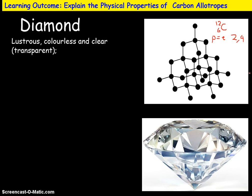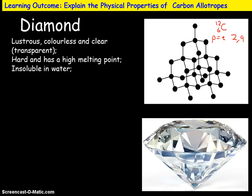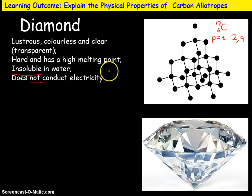Describing diamond: first of all it's lustrous, which is effectively a word for shiny. It's colourless and clear — transparent, light will pass through it — and that's largely a result of its crystalline structure. It's very hard; diamond is often talked about as the hardest naturally occurring material on Earth. But ironically, if you tap it with a hammer you can cause it to shatter, because if it vibrates at the right frequency it will resonate and fall apart. It's also got a very high melting point. It's insoluble in water, meaning it won't dissolve. And it does not conduct electricity — a really important feature that makes it different to graphite.